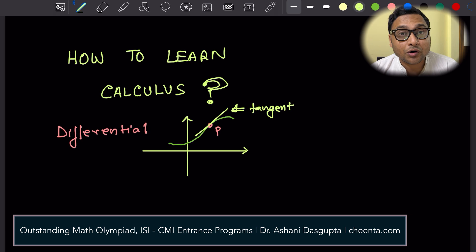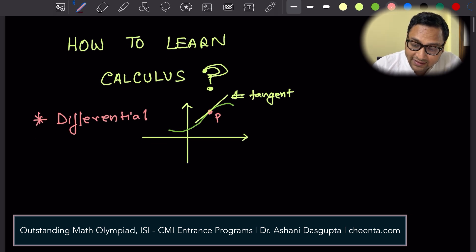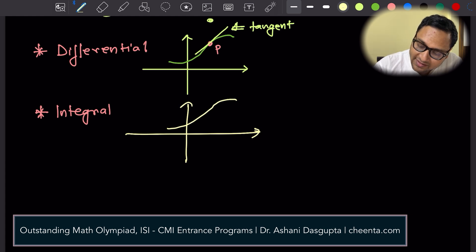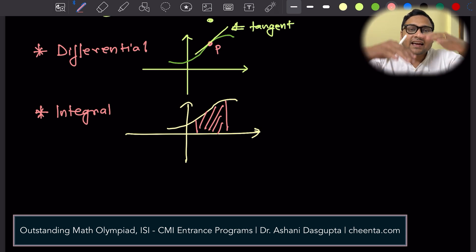It gives you the slope of the tangent line, how fast the tangent line is rising or how fast it is falling. That's what differential calculus is. And there is another part of calculus which is called integral calculus, which again, if I draw the same picture, let's say I draw an XY plane, I draw a curve like this, then integral calculus gives me a way to calculate the area under the curve.